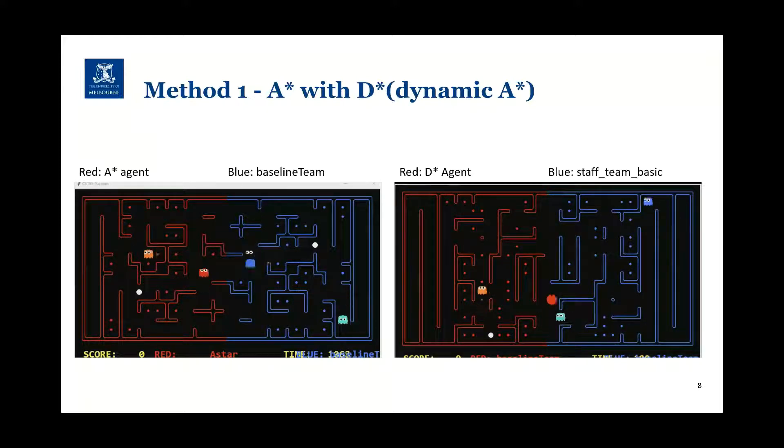As the demonstration shows, the D star agent can detect the enemies and also can search food properly, but still has some issue of calculating the heuristic value of the food in corners. And some of the action of the D star agent tactics are not quite good, due to the heuristic calculation problem.